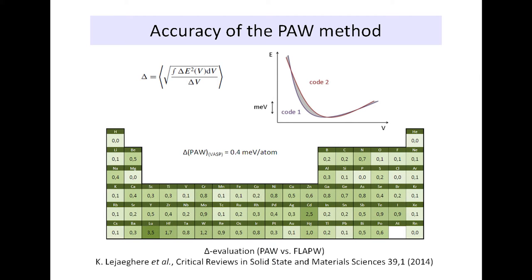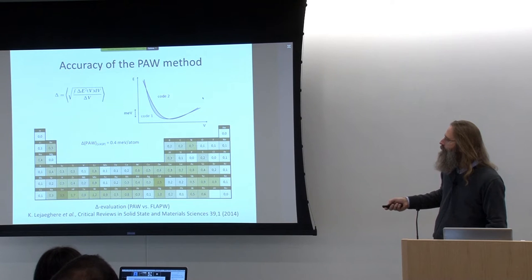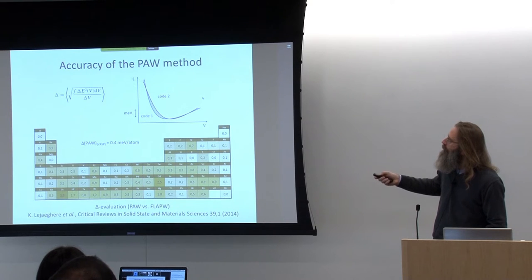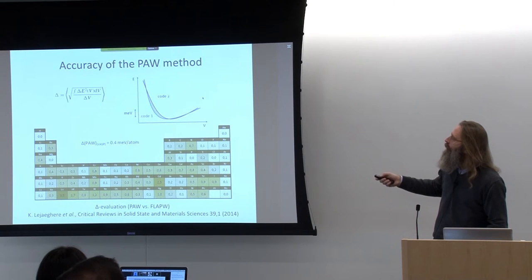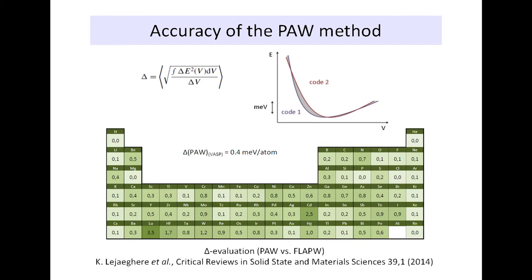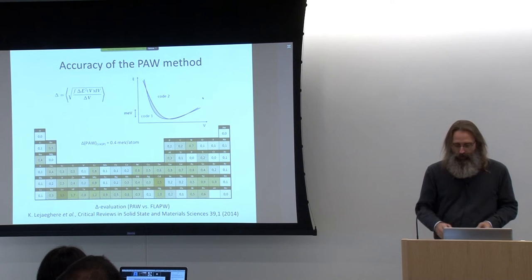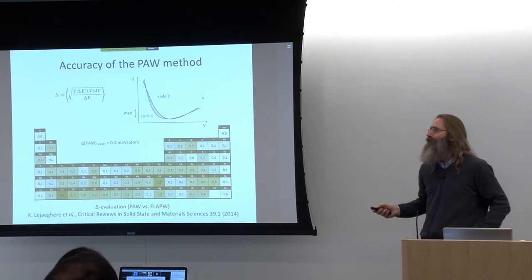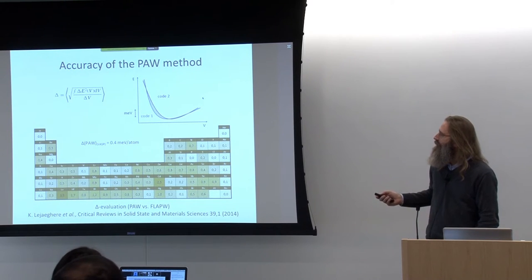Essentially, they compute a measure based on volume versus energy curves. The area where one code — say a PAW code — and an all-electron code differ is computed in terms of energy. This is the measure of the average deviation for elemental solids of all elements, and it is truly tiny. For boron, the delta — the area difference between these two curves — is 0.2 millielectron volt. For a long time, the hardest part was getting all-electron methods to agree on a common value, not the PAW codes.